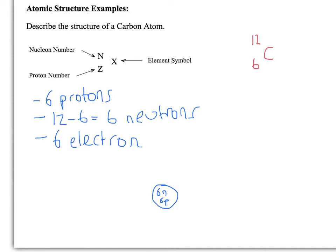On the first subshell, you're going to have two electrons. And then on the second one out, you're going to have four left over. So three, four.